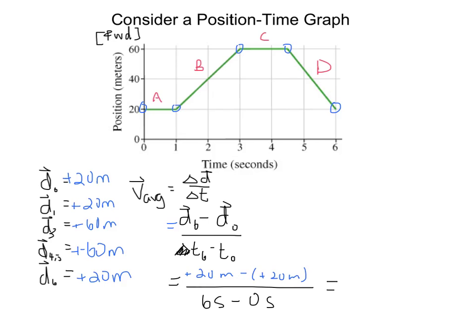So we end up with 20 minus 20, which is 0 meters over 6 seconds. So we end up with an answer of 0 meters per second. So the average velocity of this object or person or whatever is being represented here is 0 meters per second.